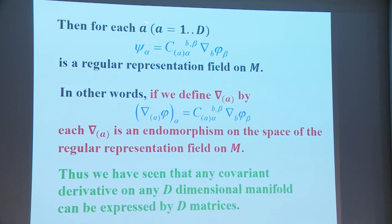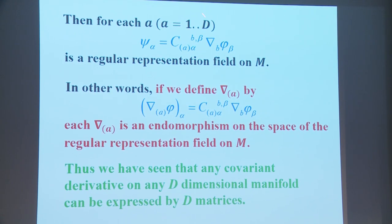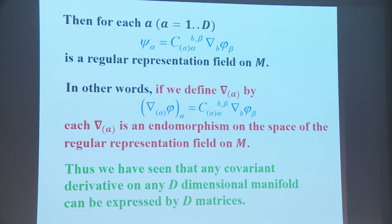For each A from 1 to D, the combination formed by mixing with Clebsch-Gordan coefficients is the covariant derivative applied to the regular representation field on M. In other words, if we define the covariant derivative ∇^(A) by this expression, each ∇^(A) is an endomorphism on the space of the regular representation field on M. In this way, any covariant derivative on any D-dimensional manifold can be expressed by D matrices.